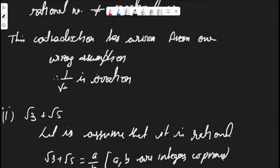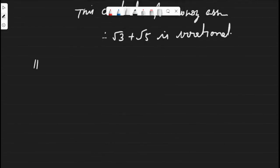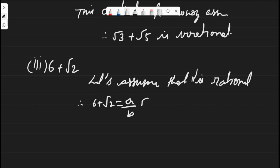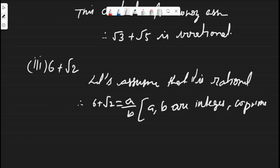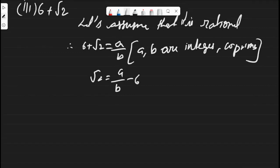Next, the third one: 6 plus root 2. It is also a very easy sum. Again, let us assume that 6 plus root 2 is rational. Therefore, 6 plus root 2 equals a by b, where a and b are integers and co-primes.